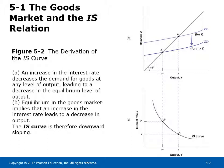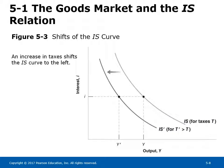Figure 5-2 shows the derivation of the IS curve. An increase in the interest rate decreases the demand for goods at any level of output, leading to a downward shift of the ZZ curve and a decrease in the equilibrium level of output. Equilibrium in the goods market implies that an increase in the interest rate leads to a decrease in output. The IS curve is therefore downward sloping. Figure 5-3 shows shifts of the IS curve. Changes in factors that decrease the demand for goods for a given interest rate shift the IS curve to the left; changes that increase demand shift it to the right. Changes in G, T, or C0 will shift the IS curve.